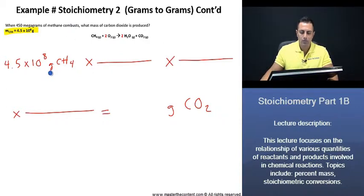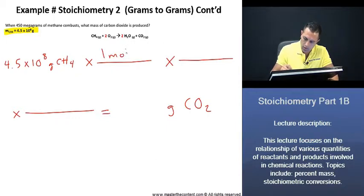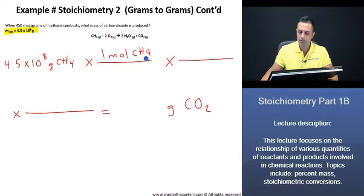Firstly, we said we needed to go from grams to moles of methane, right? And then we know that per mole of methane, what is going to be the molar mass? Well, 12 plus 4, that's going to be 16 grams, right?